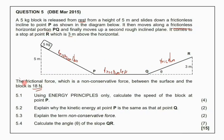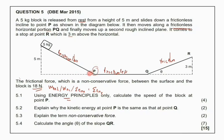Question 5.1 says: using energy principles only, calculate the speed of the block at point P. When it says 'using energy principles,' we are limited to one of three formulas: the work-energy theorem, the work done by non-conservative forces, or the sum of mechanical energy. We need to check which formula would be best for calculating the speed at P.